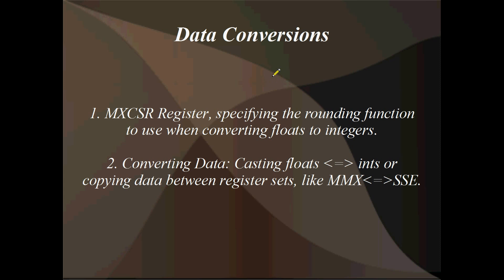It's pretty much all about copying from register to register - from x86 registers to SSE registers, or SSE registers to MMX. That sort of thing - moving data around and casting. But before we get into that, we're going to have a little look at MXCSR. This is the Multimedia State Register in SSE, and it's got some interesting bits in it that we want to set. We'll look at that first, then we'll get on to the instructions.